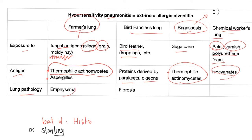Regarding lung pathology: you can have emphysema with farmer's lung and fibrosis with bird keeper's lung. In other words, these diseases could cause either restrictive or obstructive lung disease.